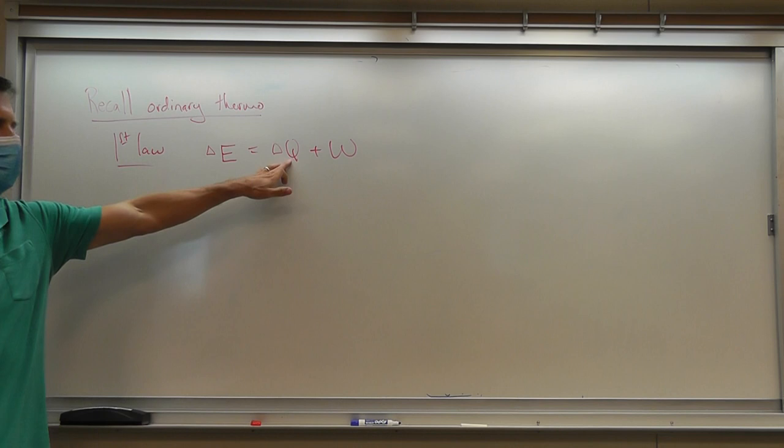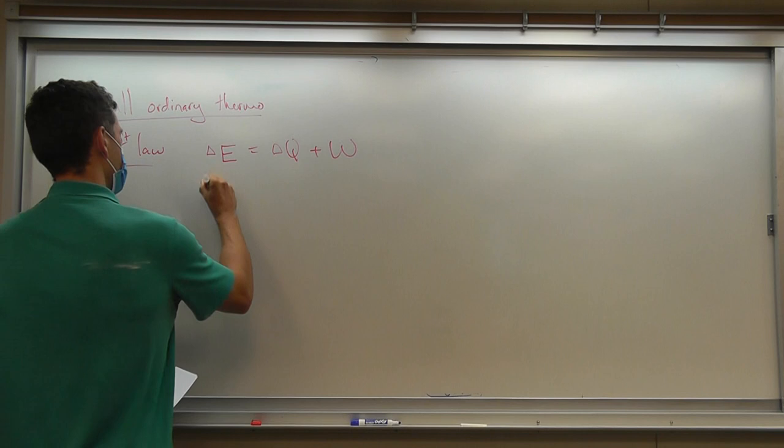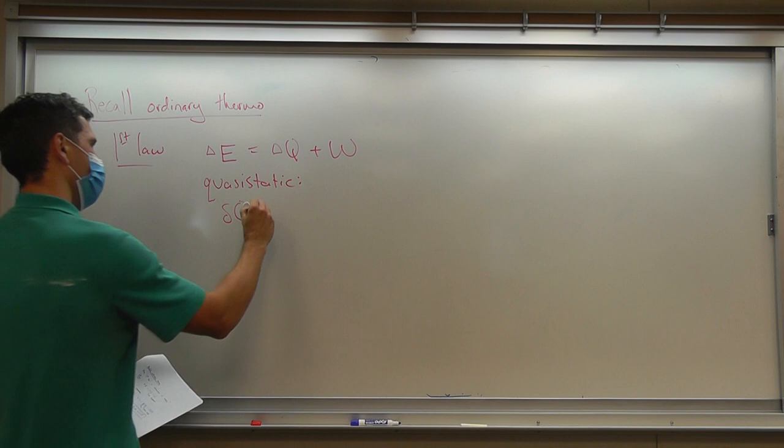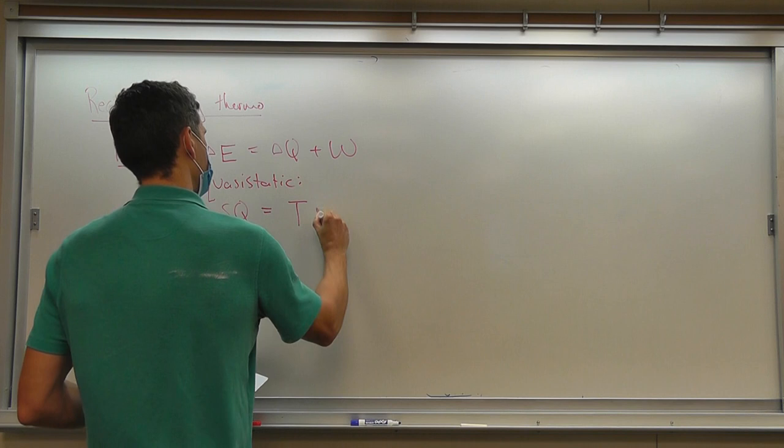So now we're going to talk about black hole thermodynamics. First I want to remind you how ordinary thermodynamics works. There's a first law, which is just conservation of energy: delta E equals delta Q plus W, where delta Q is the heat transferred and W is the work.